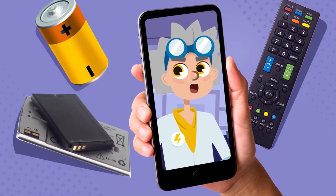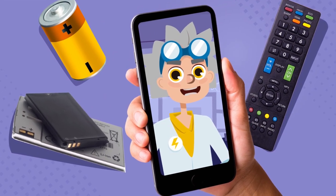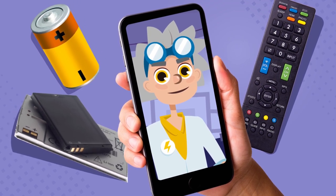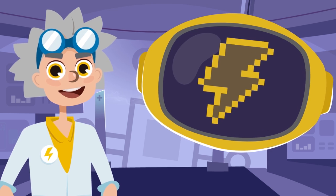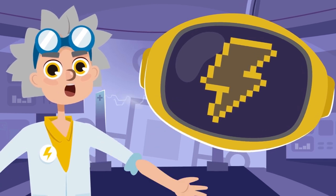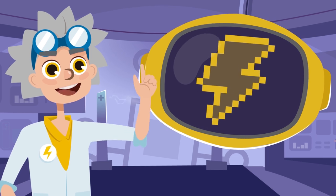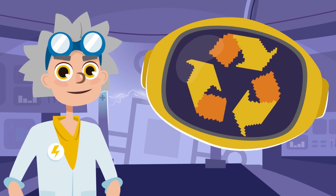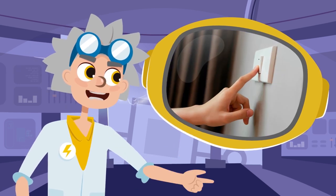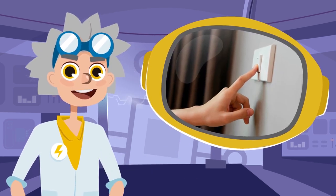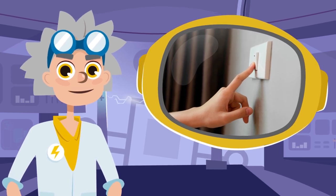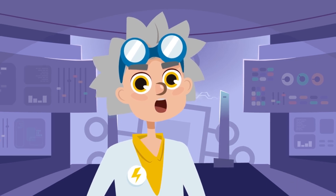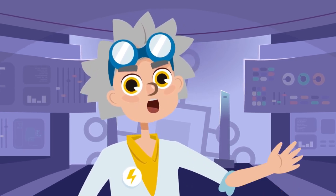Electricity can also be stored in batteries that we use to power our flashlights, mobile phones, or remote controls. Well, there you have it! Now we know where our electricity comes from. It's important to understand that electricity should not be wasted. Remember to turn off the lights and other electrical devices when they're not in use. Up next, we're going to discover types of electricity and circuits. Stay tuned for our next video!